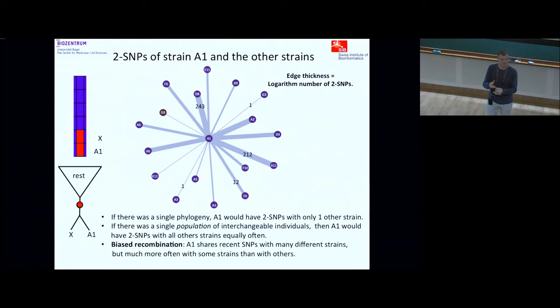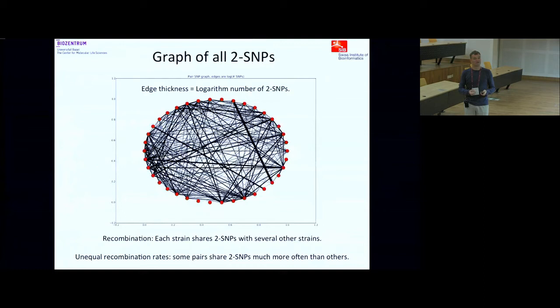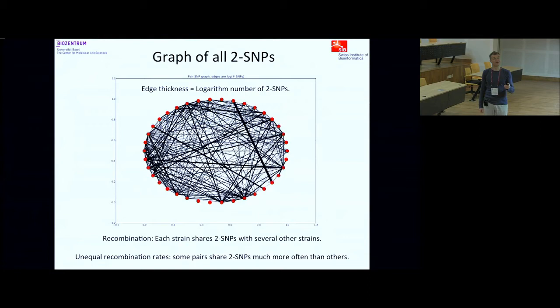Some strains occur as partners many many more times than others. The picture that emerges is: yes, all these strains are recombining with each other all the time, but they're not randomly picking who to recombine with — some pairs are much more likely to recombine with each other. If I do this analysis for all strains against all others, I get a graph where the thickness of edges is the log of the number of pair-SNPs. You clearly see very different thicknesses — a wide distribution.